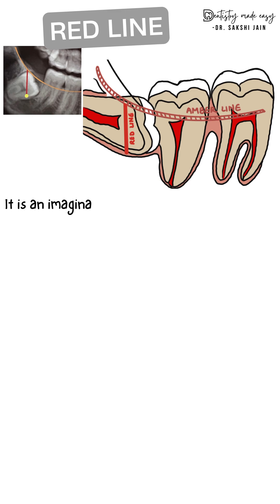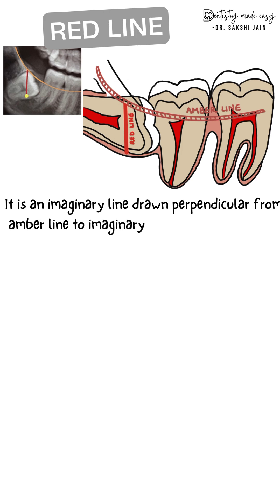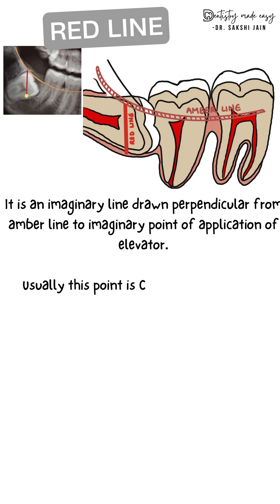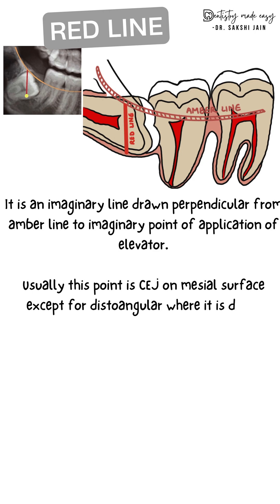The Red line is an imaginary line drawn perpendicular from the amber line to the imaginary point of application of the elevator — the instrument used for extraction. Usually that point is the CEJ on the mesial surface, with the exception of the distoangular case, where it is the CEJ on the distal aspect.